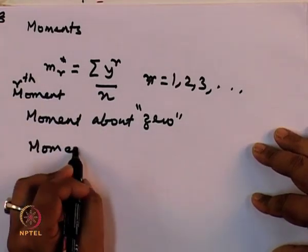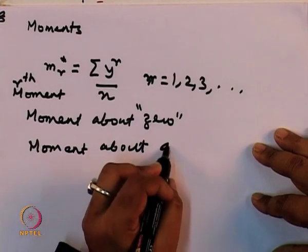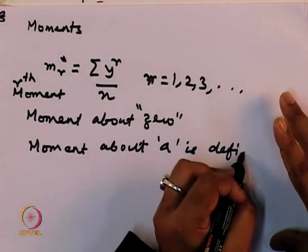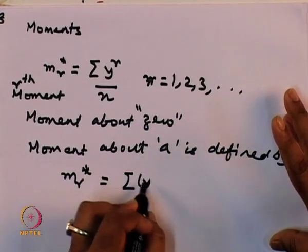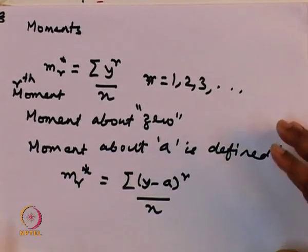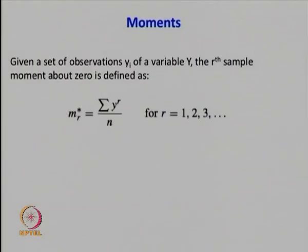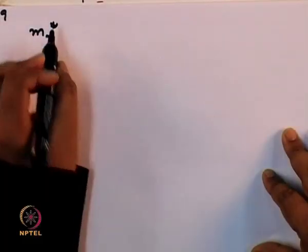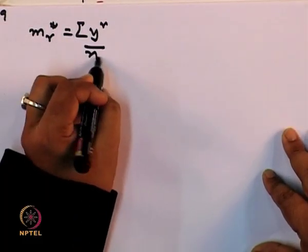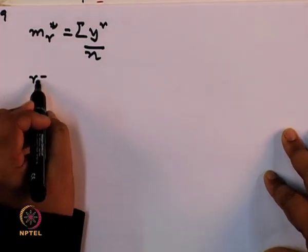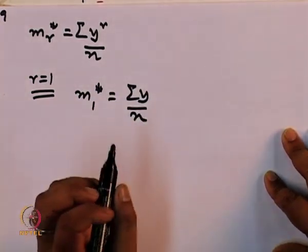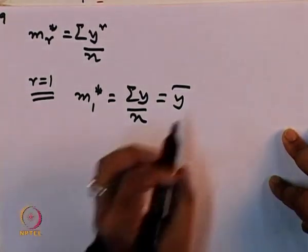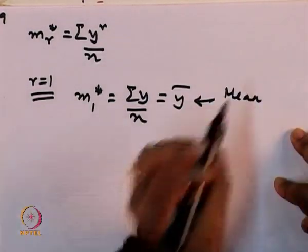The moment about 0 is m_r* equal to summation of y^r divided by n. If I put r equal to 1, then m_1* equals summation of y divided by n, which is nothing but y-bar. So the first moment about 0 is the mean.